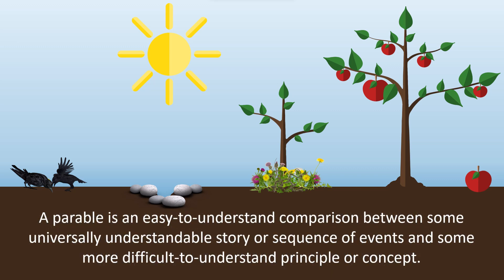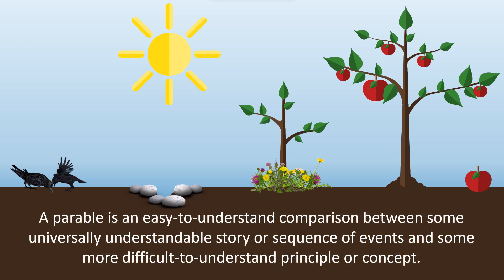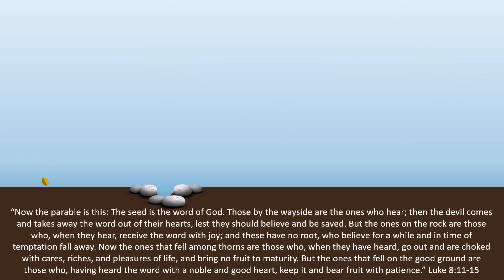A parable is an easy-to-understand comparison between some universally understandable story or sequence of events and some more difficult-to-understand principle or concept. So the easy-to-understand portion of what we know as the parable of the soils has to do with how four different soils responded to the sower's seed. But Jesus also told his disciples what the seed and the soils represent. He said, 'Now the parable is this: the seed is the word of God.'